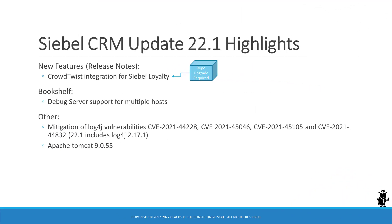Hello and welcome to the Siebel CRM update highlights for the first release in 2022. With the Siebel CRM 22.1 update, Oracle delivers the following new features and enhancements: the CrowdTwist integration for Siebel loyalty, the debug server gets an update with support for multiple hosts, the infamous Log4j vulnerabilities have been addressed in full as the update includes Log4j 2.17, and Apache Tomcat is now on release 9.0.55.